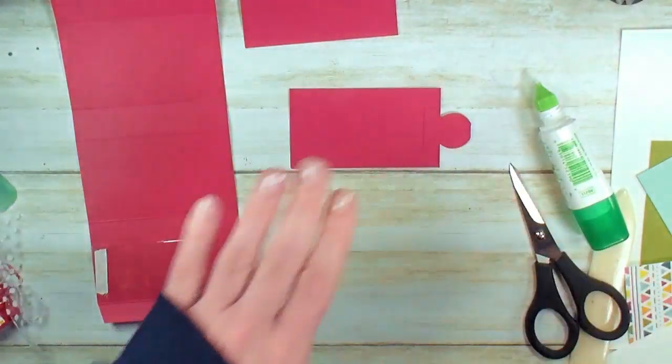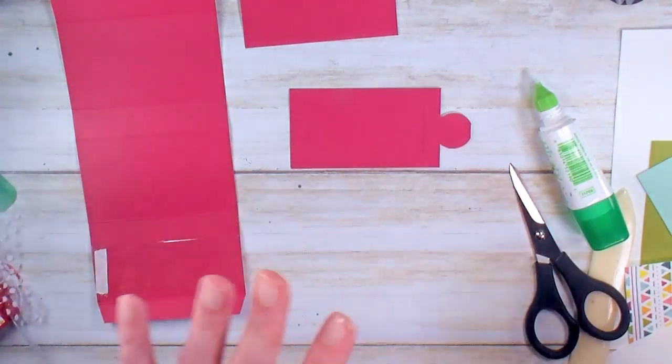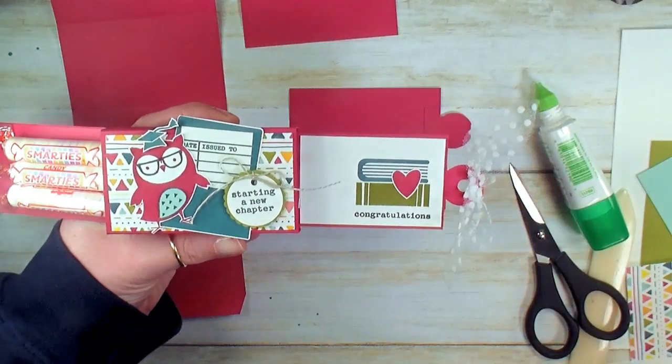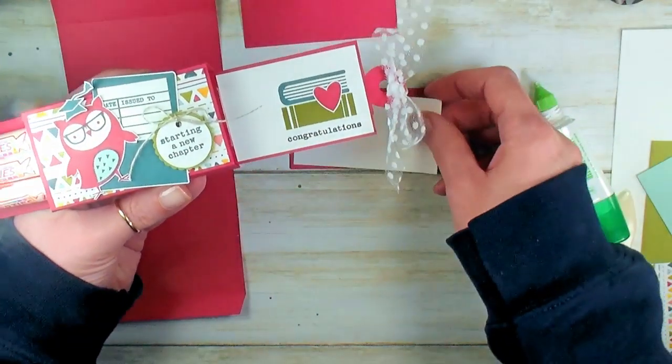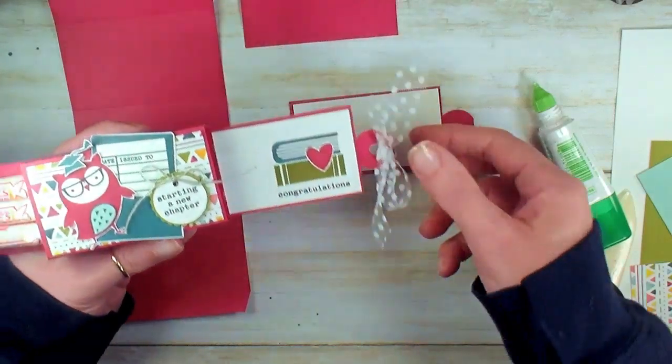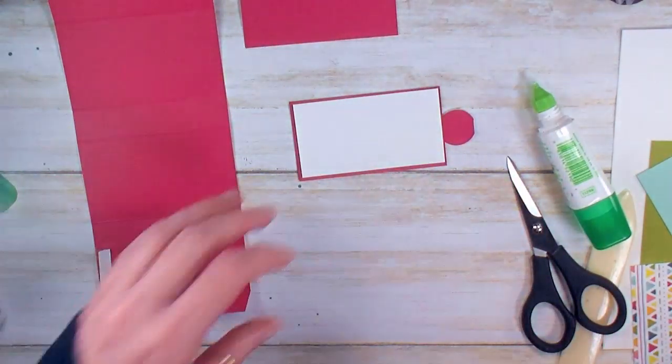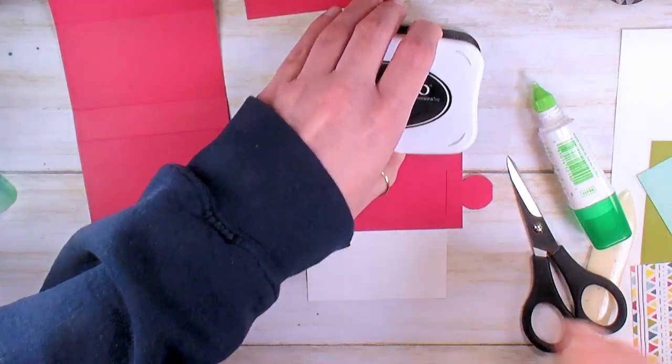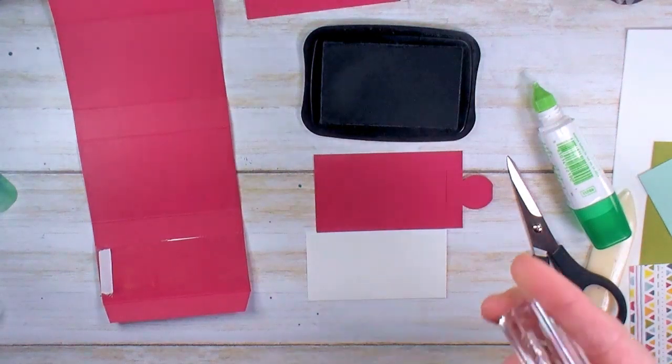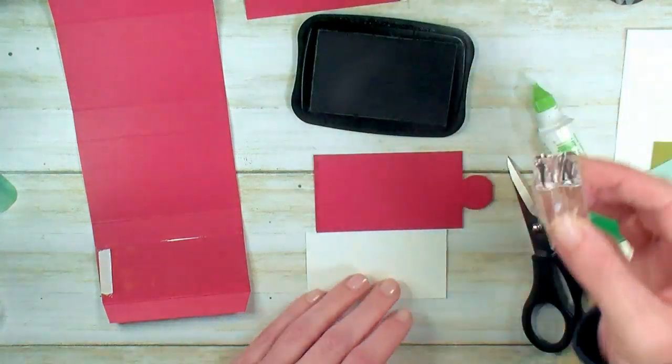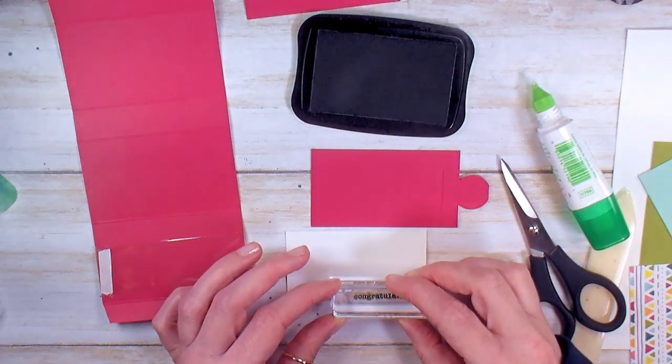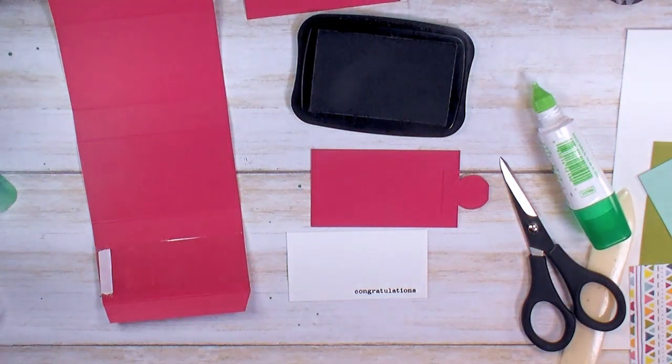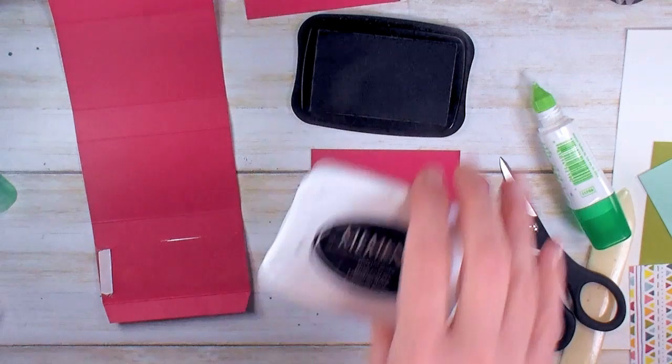Now before we go and assemble any of this, we've got a little bit of stamping to do for the inside. I've got a piece of Whisper White cardstock that is one and three quarters by three and a quarter. So let's first do a little bit of stamping. I've got some Memento Tuxedo Black and the Congratulations Word from Check You Out.